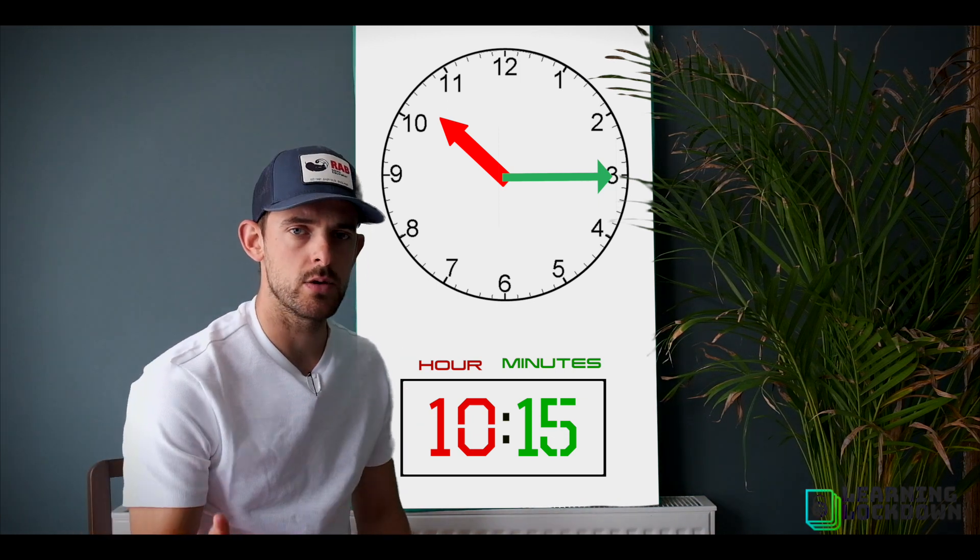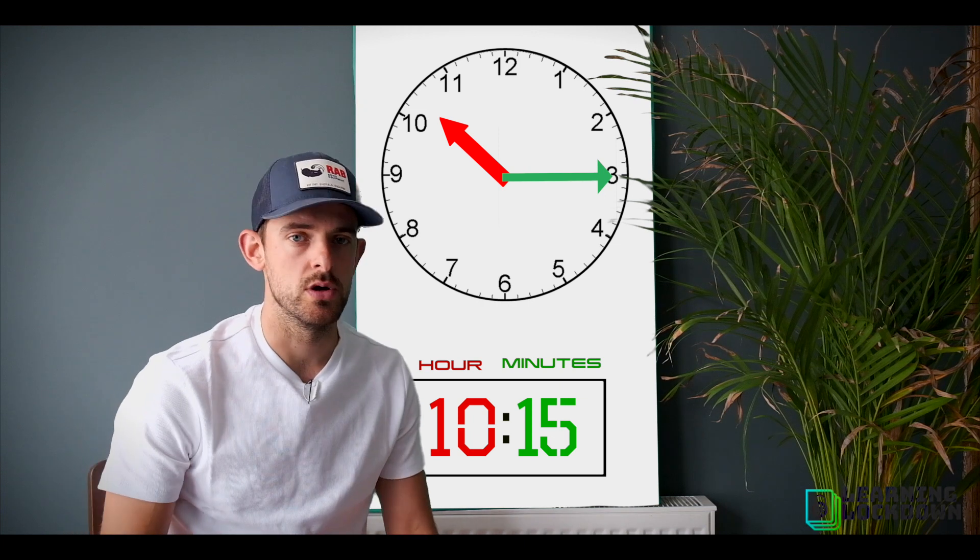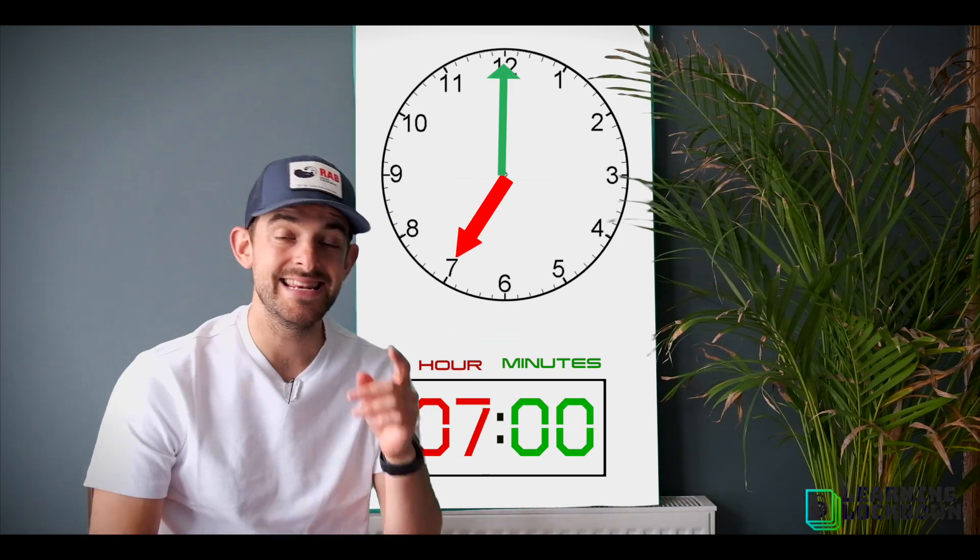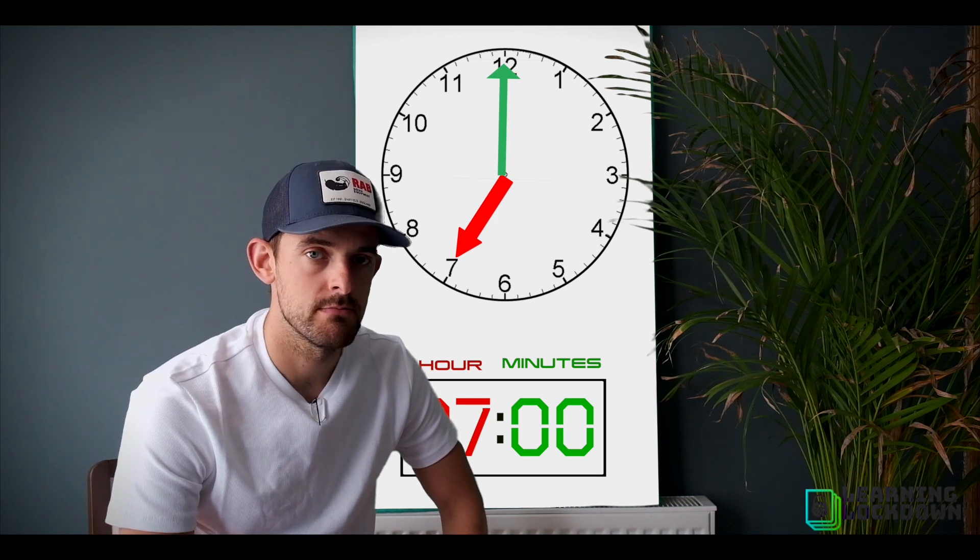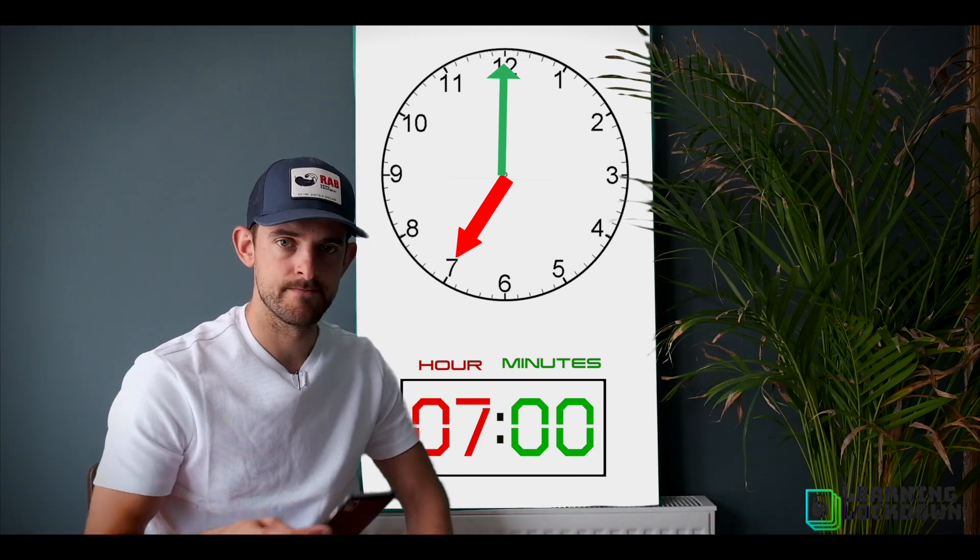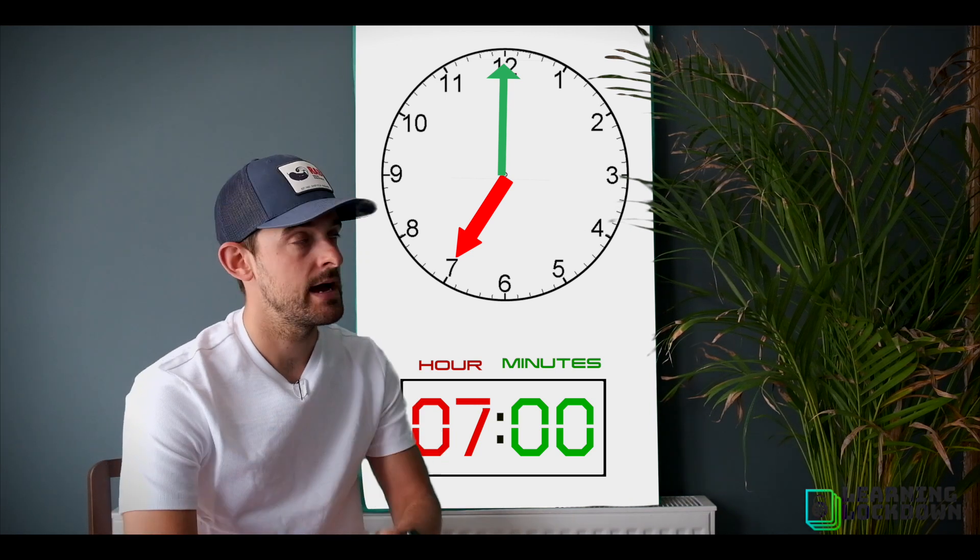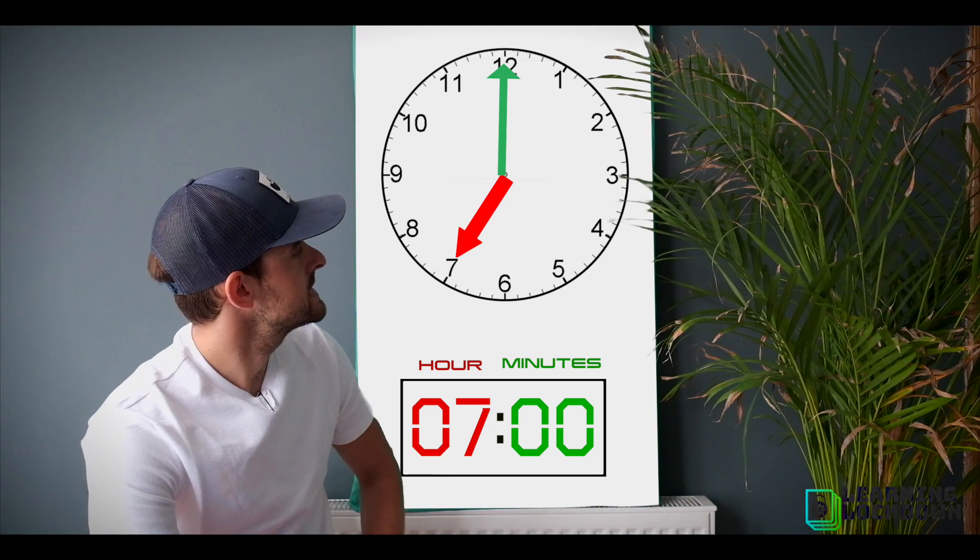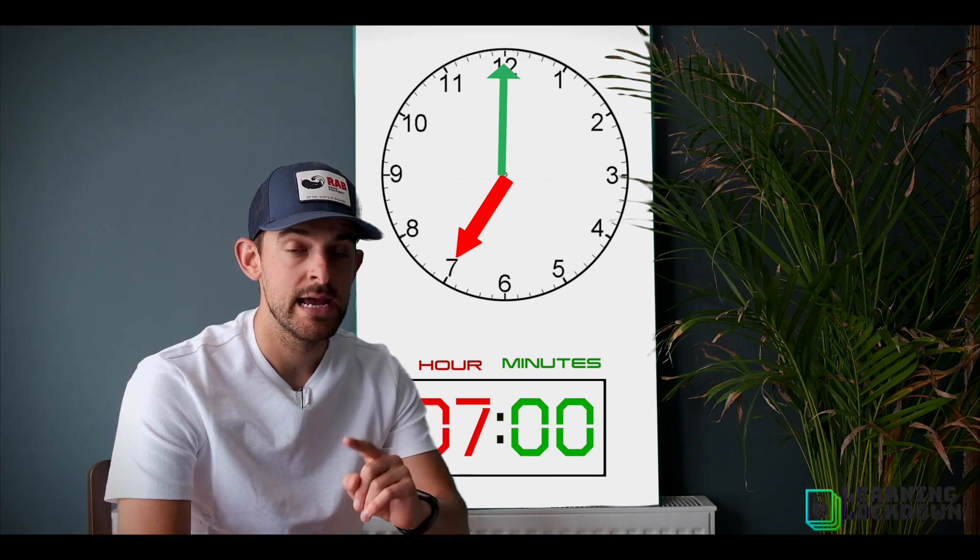For example, I might set off to get to work at seven o'clock and I need to be in by 7:30. But my sat nav says it's going to take 40 minutes to get there. Now remember, I set off at seven o'clock, it's going to take me 40 minutes to get there. Well, I'm going to move my minute hand forward 40 minutes.